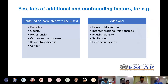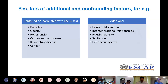We know that age and sex is not everything — there are lots of confounding and additional factors. Age is correlated with increases in diabetes, obesity, hypertension, and other diseases, and there are many other factors that can enter the equation. It's not just about age and sex.